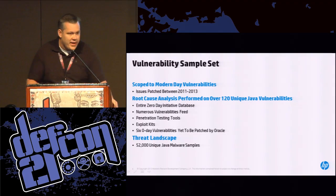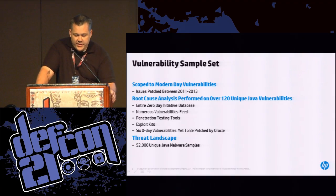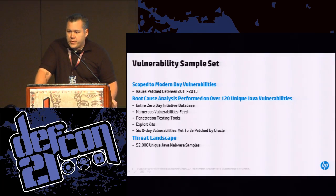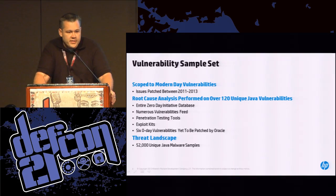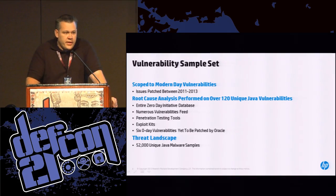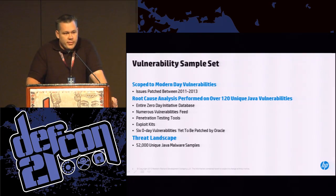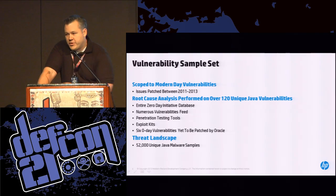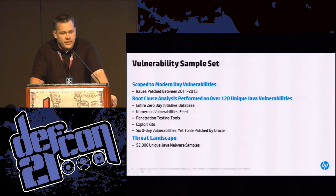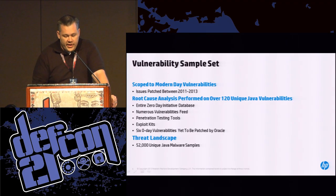We scoped ourselves to modern-day Java vulnerabilities — every issue patched between 2011 and 2013. We performed a root cause analysis on over 120 unique Java vulnerabilities — this is probably the largest collection of Java vulnerabilities outside of Oracle or the NSA or some other nation states. We had the entire Zero Day Initiative database, numerous vulnerability feeds, all the big-name penetration testing tools, and we actually had six Java zero days already submitted to Oracle for patching in this analysis.